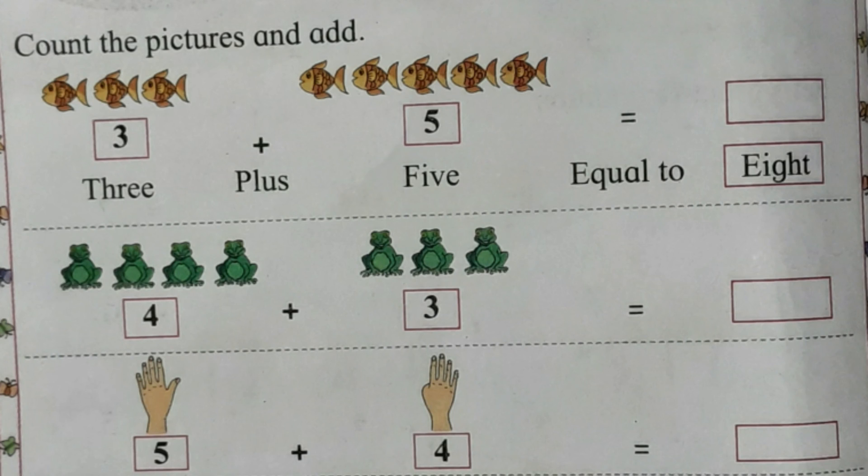Count the pictures and add. In first picture, three fishes and five fishes makes eight fishes. Means three plus five is equal to eight. Three plus five is equal to eight.